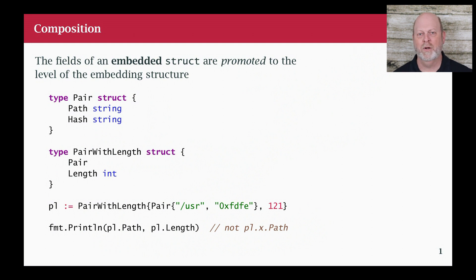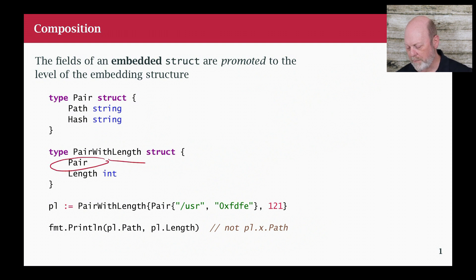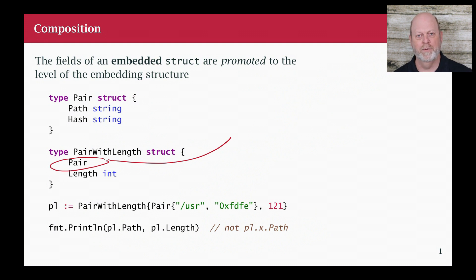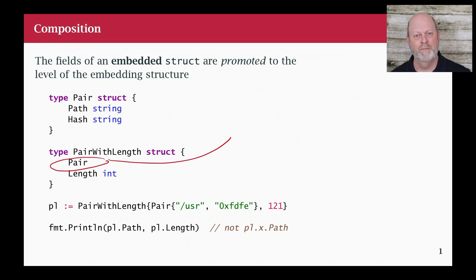Then I have another struct which may look a little weird: pairWithLength. And pairWithLength has in it pair. Normally in a struct you have a field name and then the type of the field. But here what we have is just a type — pair is a struct type — and it's here by itself without a field name. So we have a field without a name, but it has a type.